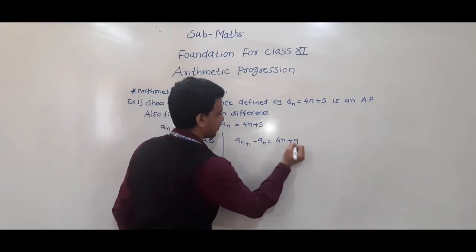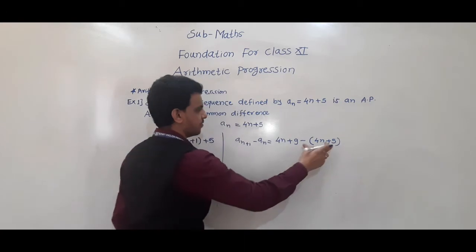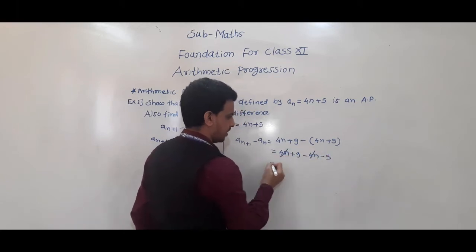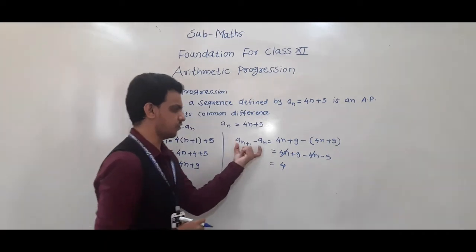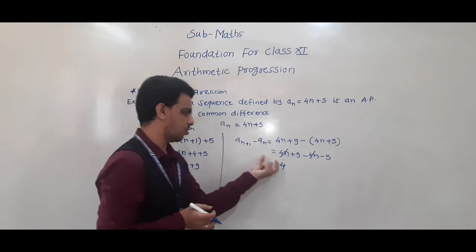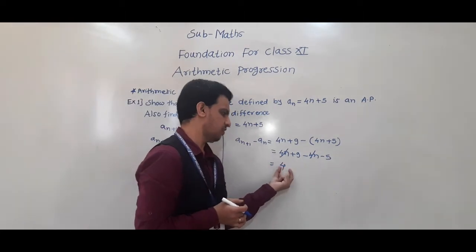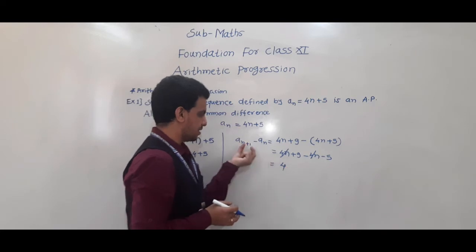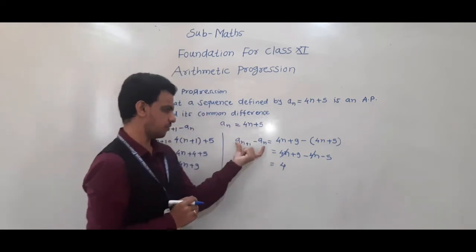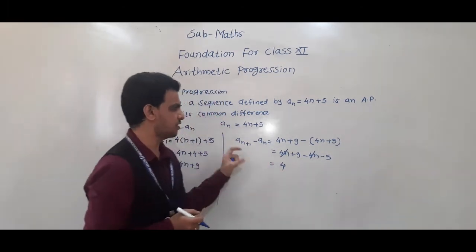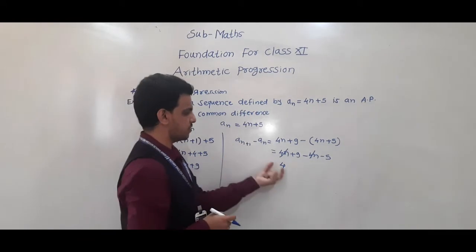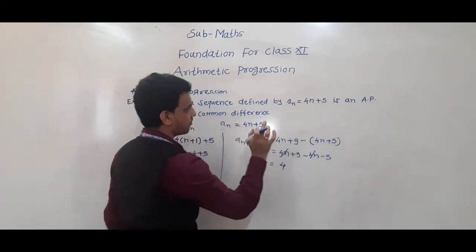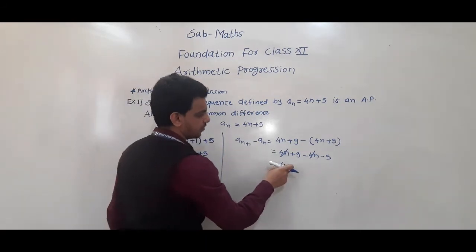Now, a(n+1) − an = (4n + 9) − (4n + 5) = 4n + 9 − 4n − 5 = 4. This difference is constant and independent of n — n is not there. So, the difference between two consecutive terms is constant. Therefore, the given sequence is an AP and the common difference is 4.